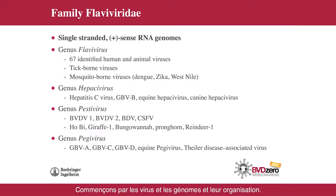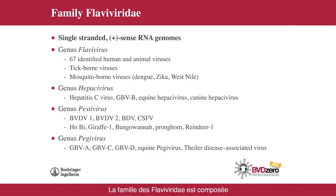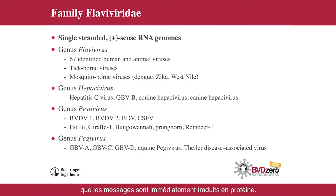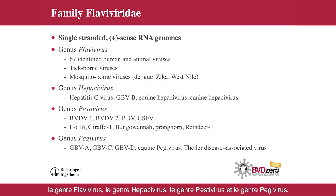Let's begin with the viruses, their genomes, and their organization. Both Zika virus and BVD virus are members of the family Flaviviridae. This family consists of viruses that have a single-stranded positive-sense RNA genome, meaning the viral RNA acts as messenger RNA and is immediately translated into protein. The family Flaviviridae is separated into four distinct genera: the genus Flavivirus, the genus Hepacivirus, the genus Pestivirus, and the genus Pegivirus.